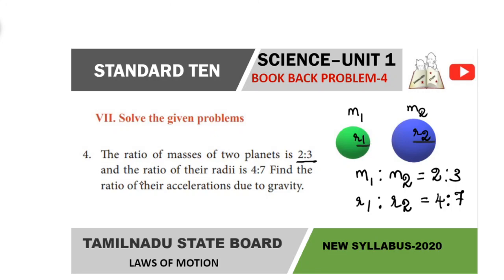The ratio of their radii is 4 is to 7. So first planet radius is 4, second planet radius is 7. That is, R1 is to R2 equal to 4 is to 7.